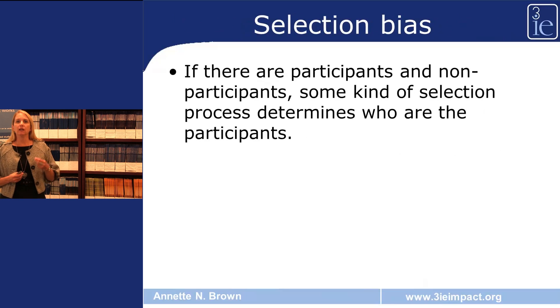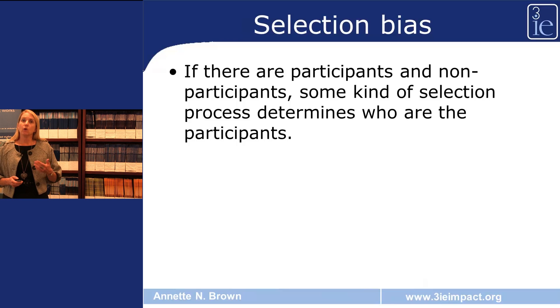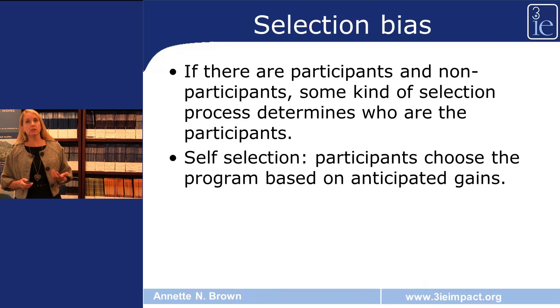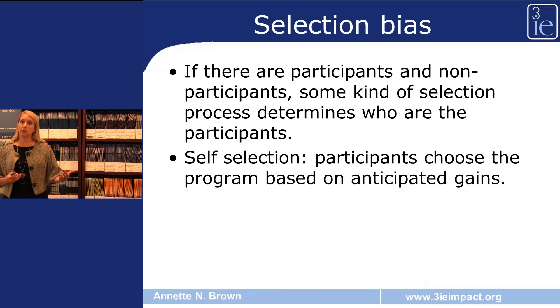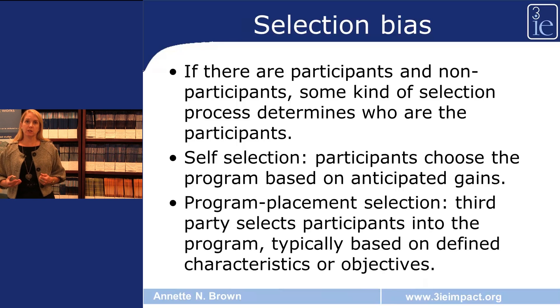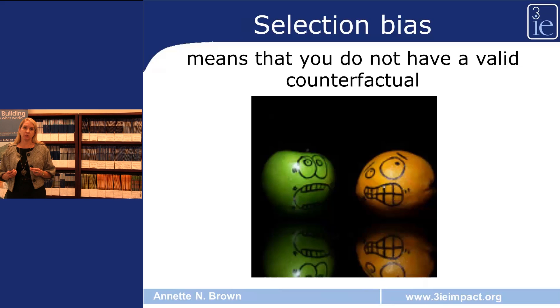So what is selection bias? If there are participants and non-participants, some kind of selection process has created those two groups. One process is self-selection, where participants choose whether or not to participate based on their own anticipated gains. We also see program placement selection, where a third party decides who participates, usually based on observable characteristics. When selection occurs through either of these processes, there are almost always differences between the program and comparison groups — this is selection bias — meaning we do not have a valid counterfactual; in essence, we are comparing apples to oranges.